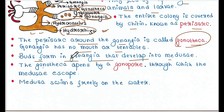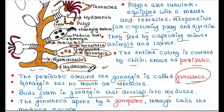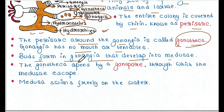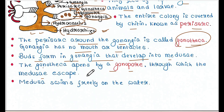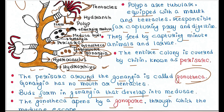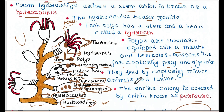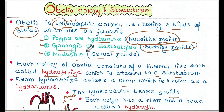The third structure is medusa. Medusa are originated in the gonangia. The gonotheca opens by a gonopore through which the medusa escapes. The medusa buds are generated inside the gonangia itself, and after maturation they come out through the gonopore. The emerging medusa then swim freely in the water. These are the three types of structures found in the Obelia colony.